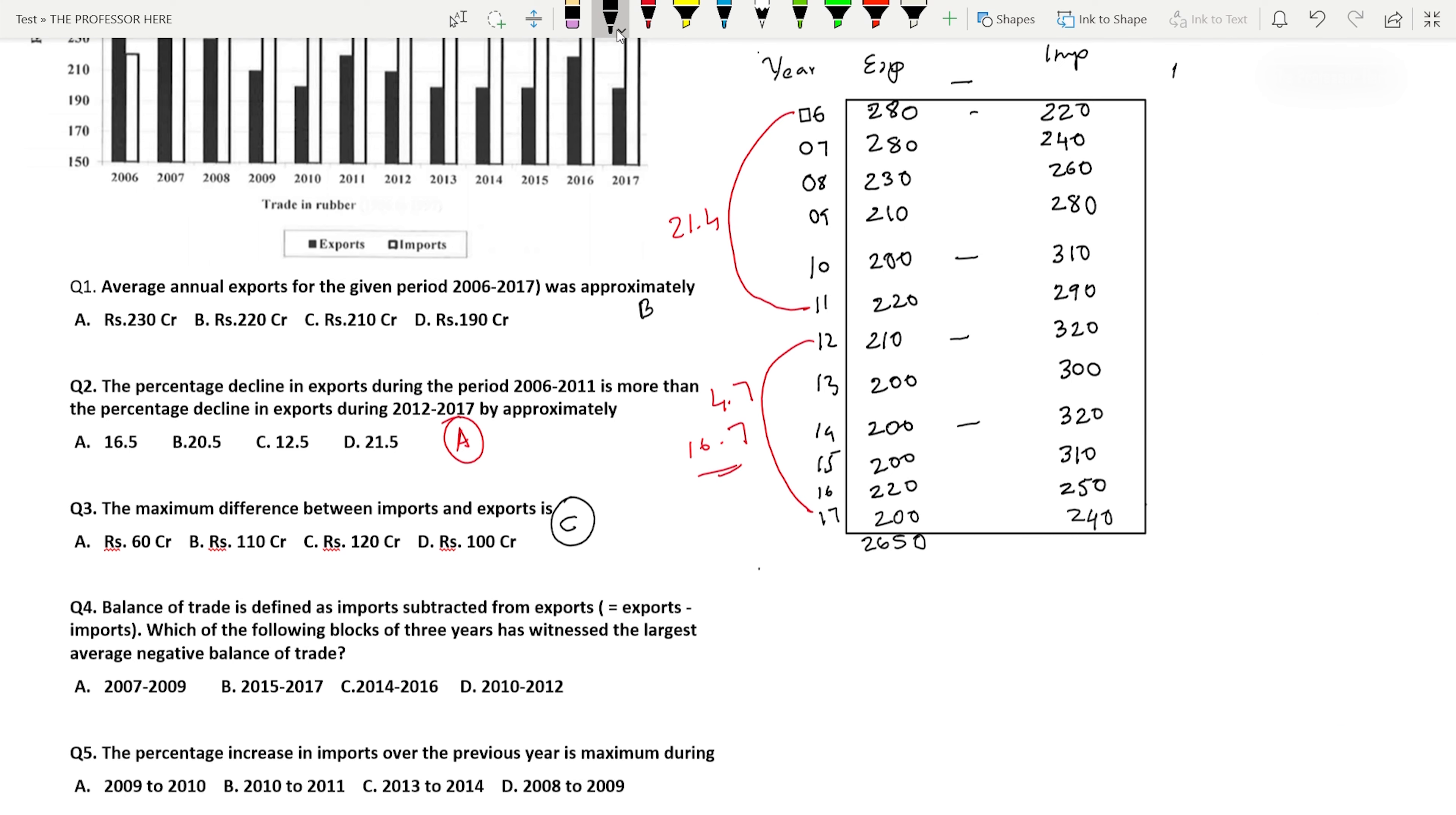I have cleared some part to write the balance of trade. Balance of trade from 2007 to 2009, export minus import: in 2007 is 40, in 2008 is minus 30, in 2009 is minus 70. Option D, 2010 to 2012: minus 110, minus 70, minus 110. Option C, 2014 to 2016: minus 120, minus 110, and minus 30. Option B, 2015 to 2017: 2015 and 2016 we have already written, 2017 is minus 40.